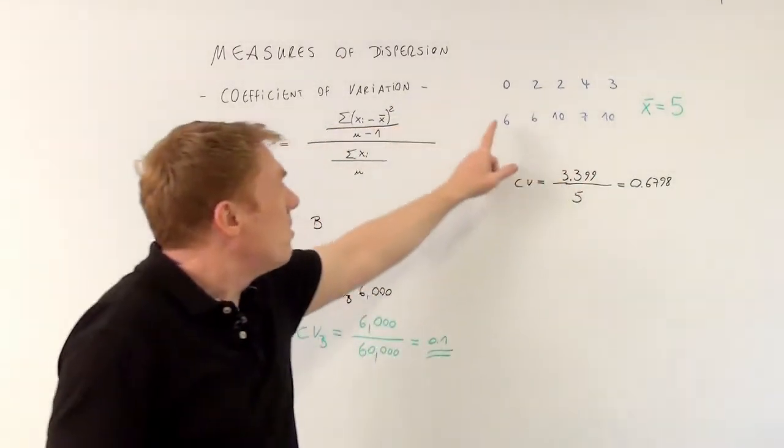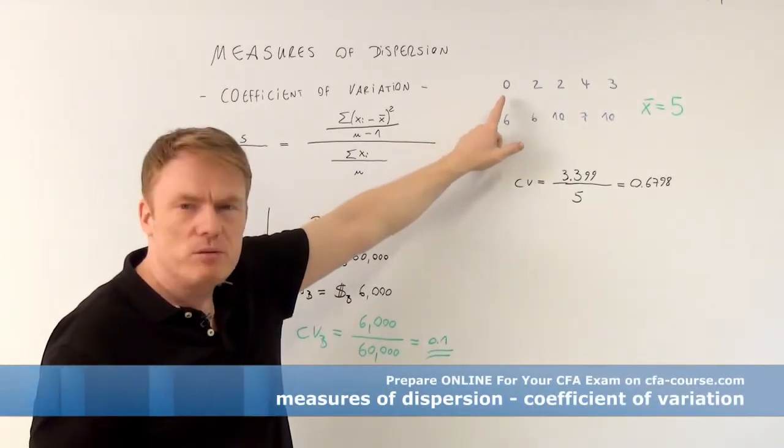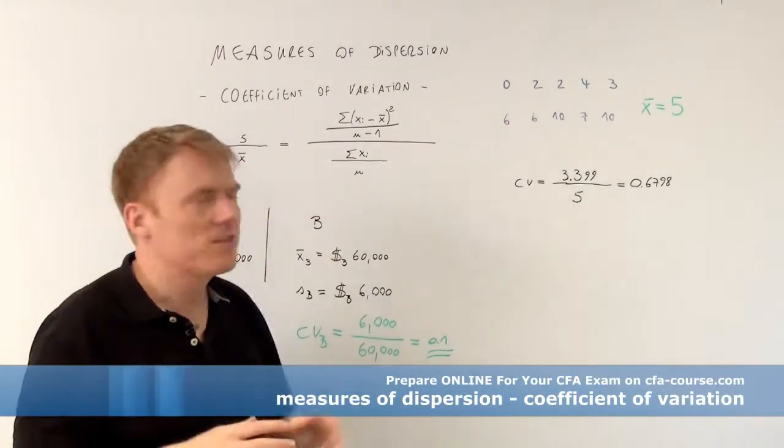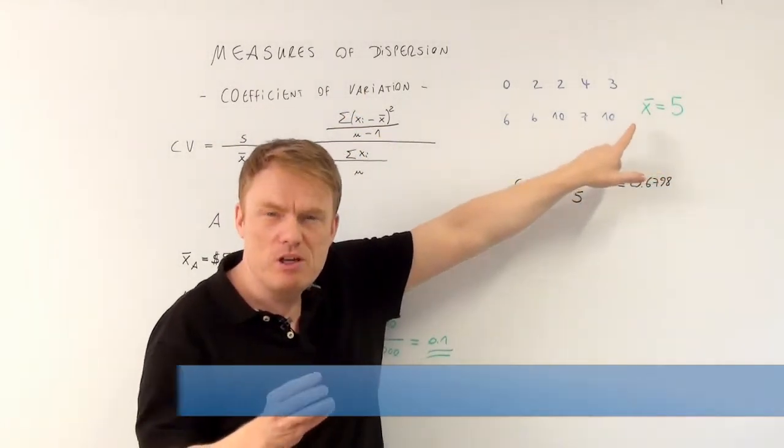So look at this for example. The statistical data of 10 values like 0, 2, 2, 4, 3, 6, 6, 10, 7, and 10, leading to an x-bar, leading to an arithmetic mean of 5.